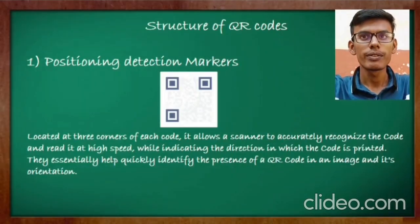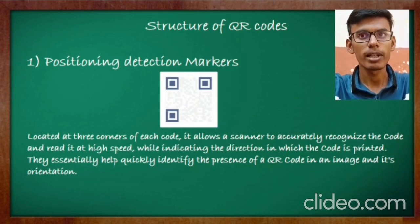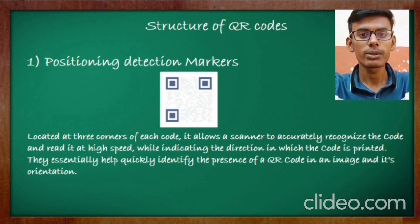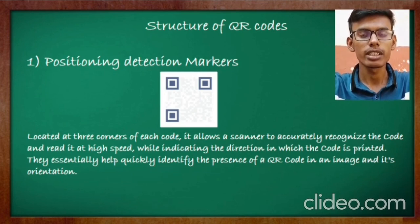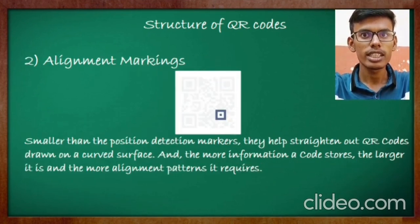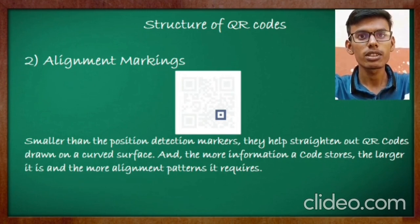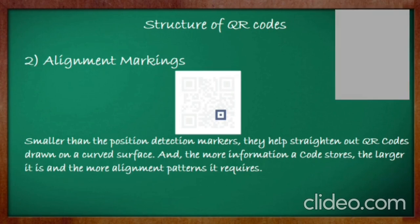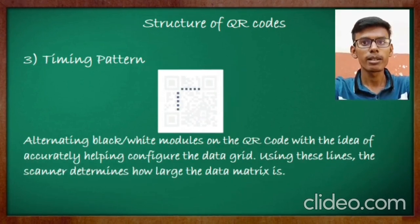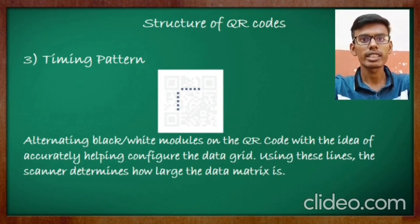Thanks Abhishek. Visually, what comes to mind when we see a QR code? A QR code is a complex matrix of black and white squares. The anatomy of a QR code is divided into seven parts. The three position detection markers located at the corners accurately recognize the code at high speed. Smaller than the detection markers are the alignment markers, which store information and get bigger in correspondence to stored information. The timing pattern helps to configure the data grid and helps the scanner know how large the data matrix is.